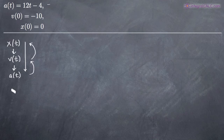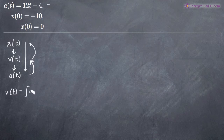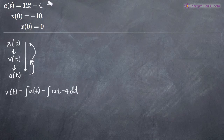The way we'll work this problem is we'll take the integral of the acceleration function. The integral of the acceleration function, working backwards through our diagram, gives us the velocity function. So the velocity function is going to be equal to the integral of 12t - 4 dt, because that's the acceleration function we were given.